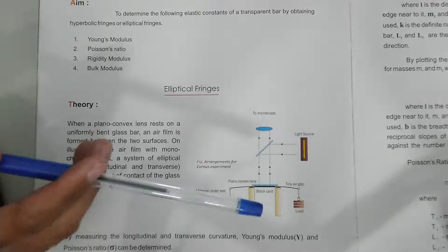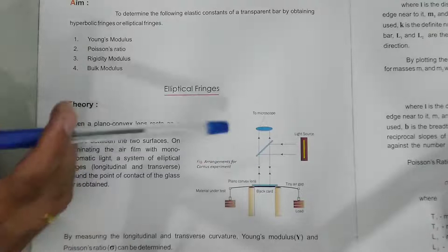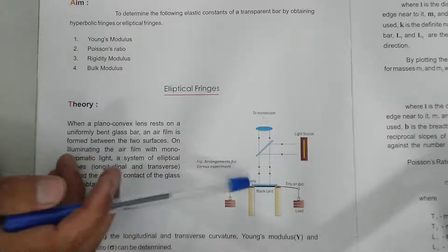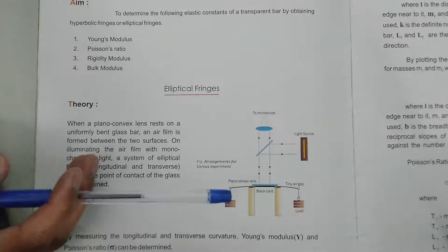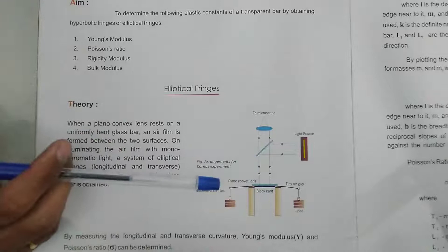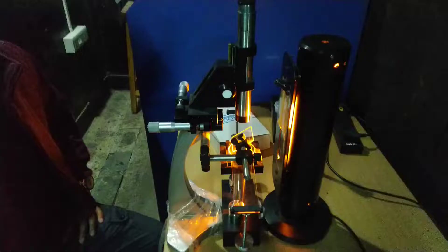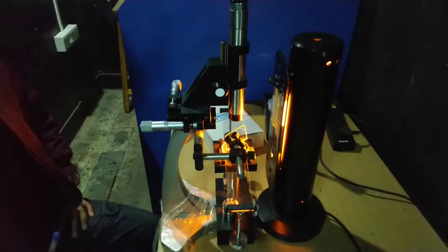Once the elliptical fringes appear, we find the diameter of the fringe. For hyperbolic fringes, the same arrangement is used but we replace the plano-convex lens with a glass slab. We then observe the hyperbolic fringes, find the diameter, and perform the calculation. Now let's check out the apparatus.